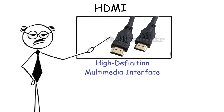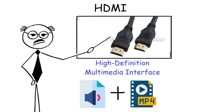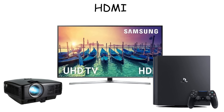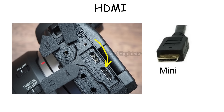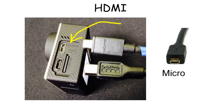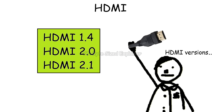HDMI, or High Definition Multimedia Interface, is a display cable like VGA, but it can carry both video and audio signals through a single connection. It's commonly used for TVs, monitors, projectors, and consoles. Other than the standard type, HDMI has other types too, such as mini-HDMI, which is often found on portable monitors or DSLR cameras, and also micro-HDMI, which is commonly used in compact devices like action cameras such as GoPro.